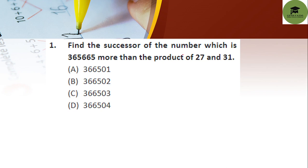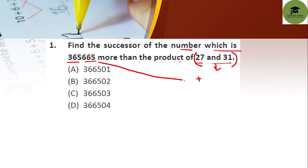The first question: find the successor of the number which is 365,665 more than the product of 27 and 31. So in this sum, first find the product, then add that number, and then find the successor — meaning you add 1 to get the successor. These three steps are needed for this question.